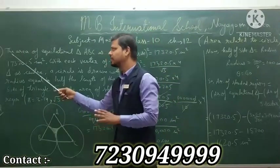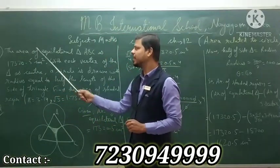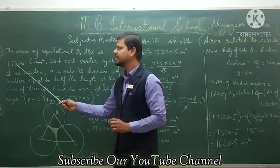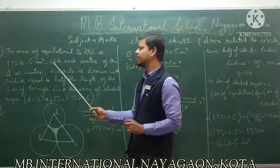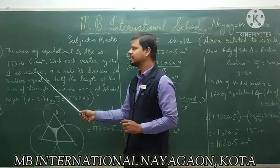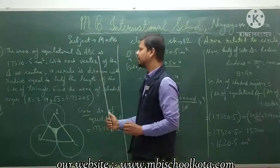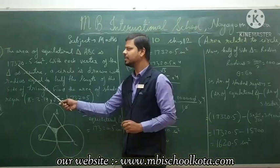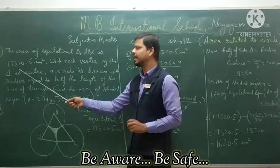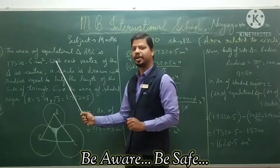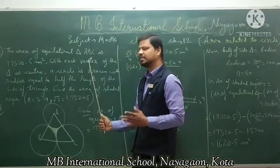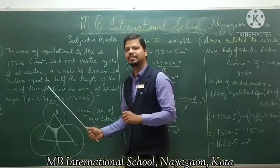Now in this video we discuss a very important question: the area of equilateral triangle ABC is 17320.5 centimeter square. With each vertex of the triangle as center, a circle is drawn with radius equal to half of the length of the side of the triangle.